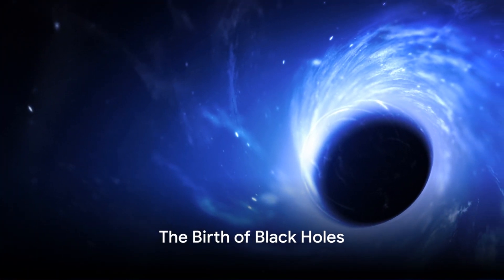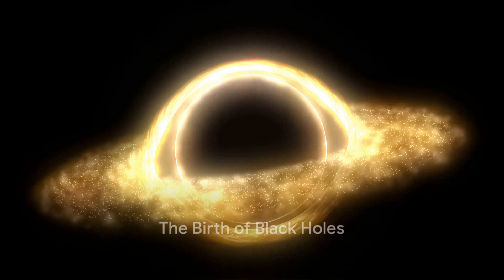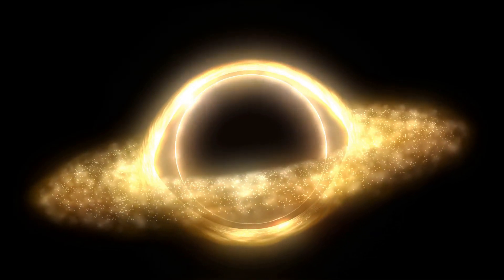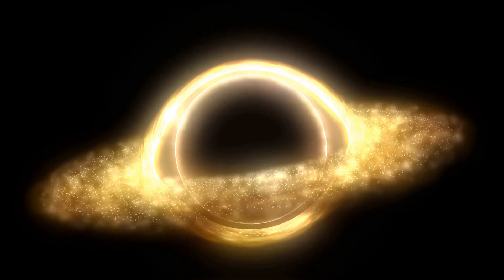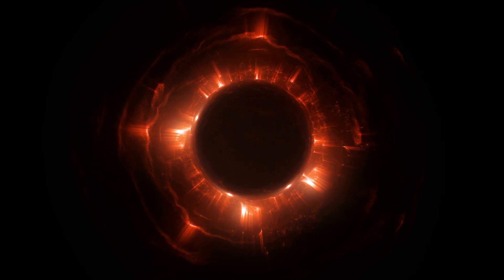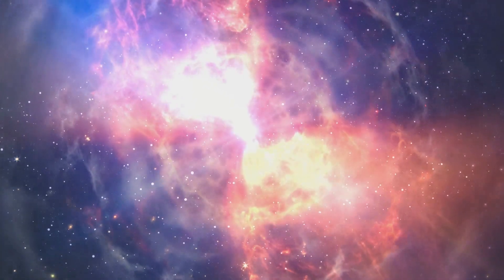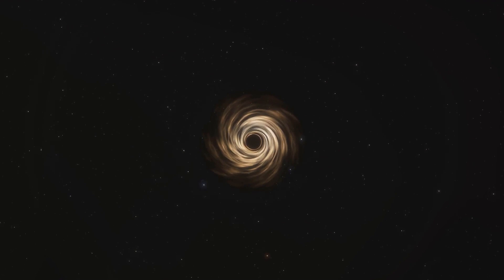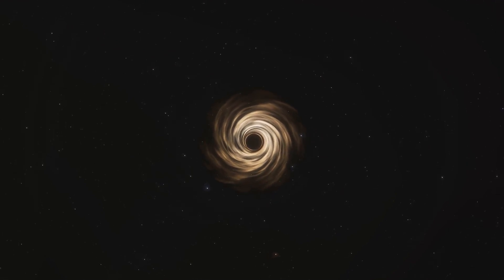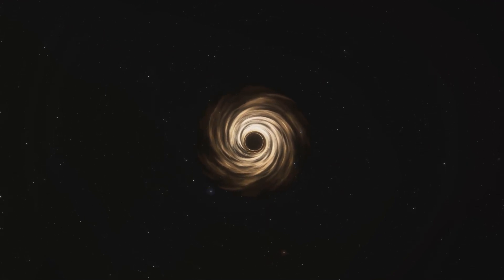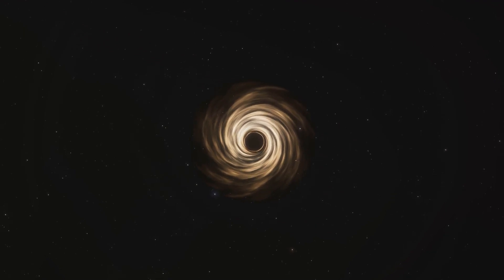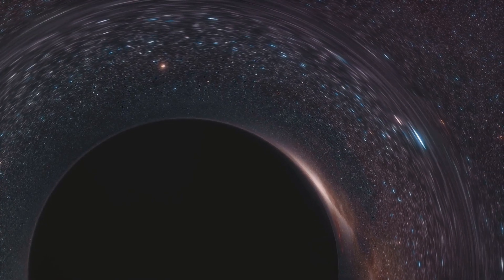At the center of most galaxies, including our own Milky Way, lies a black hole. Now you may be asking, what exactly is a black hole? Well, think of it like the universe's ultimate recycling bin. When stars much larger than our sun reach the end of their life cycles, they explode in a spectacular supernova. The remnants of these stars then collapse under their own gravity, creating a point in space with a gravitational pull so strong that not even light can escape.